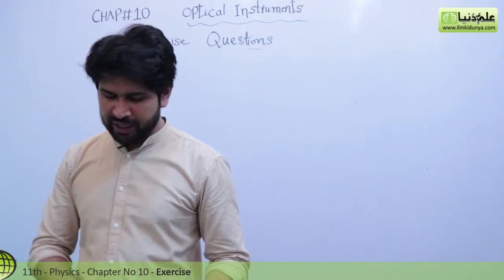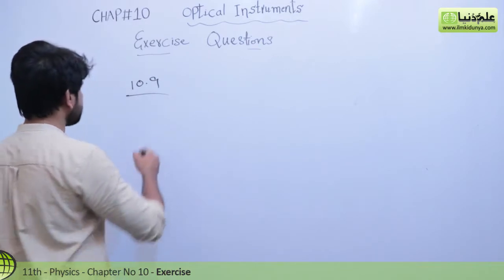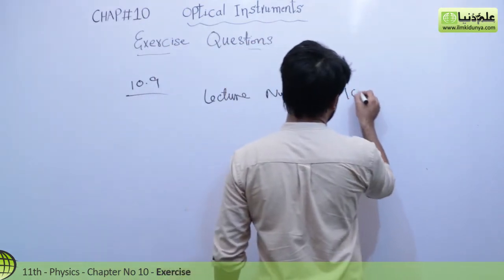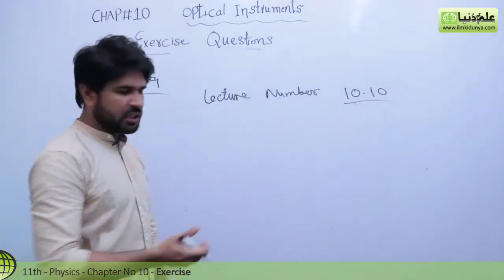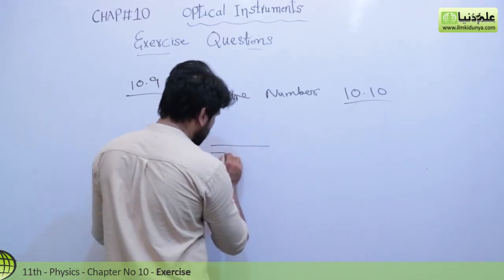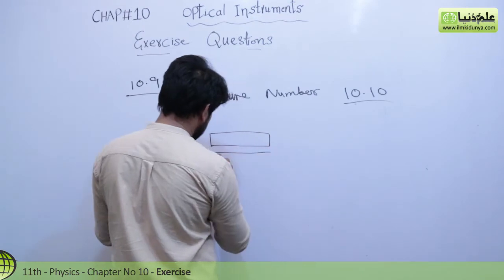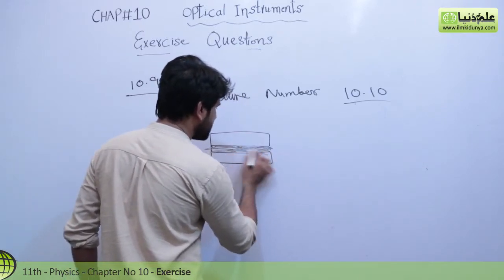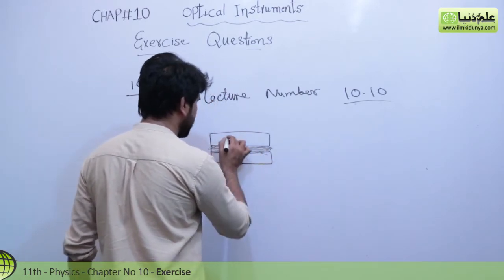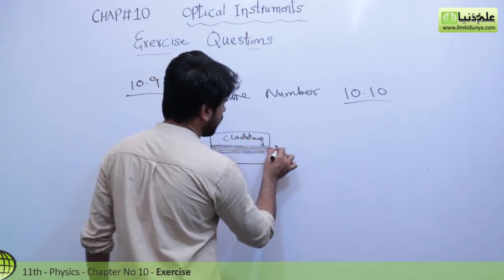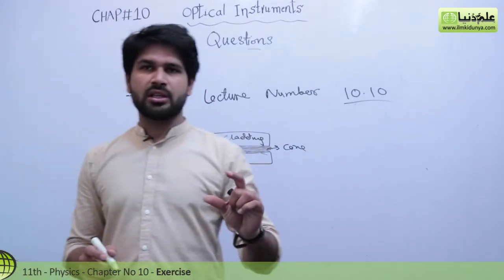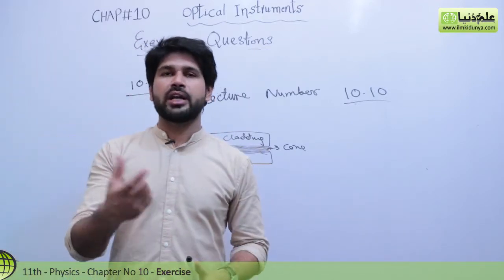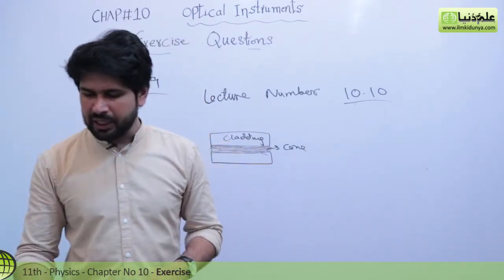The answer of this question you can find in our lecture number 10.10. I will give you a little overview of the single mode. The single mode has a central core which is thin. The density is more, and a monochromatic beam transmitted from a laser is used. We also have multi mode.